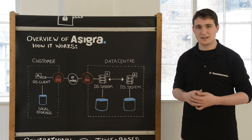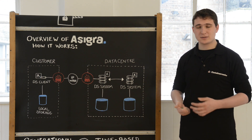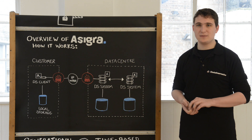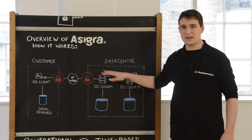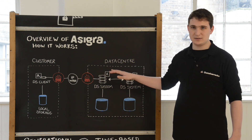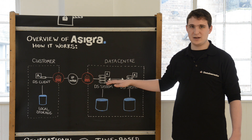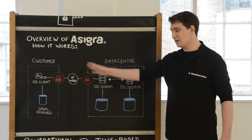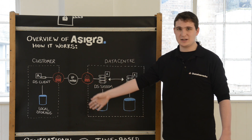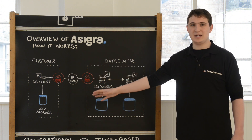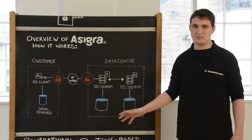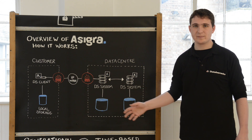This allows for fast restores of individual files and you don't have to contact the DS systems to restore this information. So therefore if your WAN connection has gone down, you may still be able to retrieve individual files.